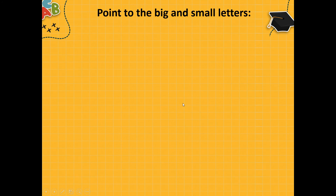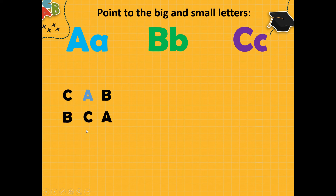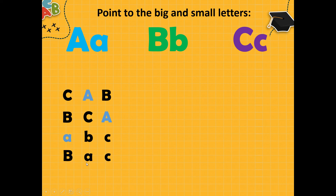Now we must point to the big and small letters. We have A — big A and small a, B — big B and small b, and C — big C and small c. Now we must find big A. Where is big A here? Let's check. Yes, it is big A. Next. Where is the big A here? Yes, it is big A. Now we must find small a. Let's check. Yes, it is small a. Where is the small a? Yes, it is small a.